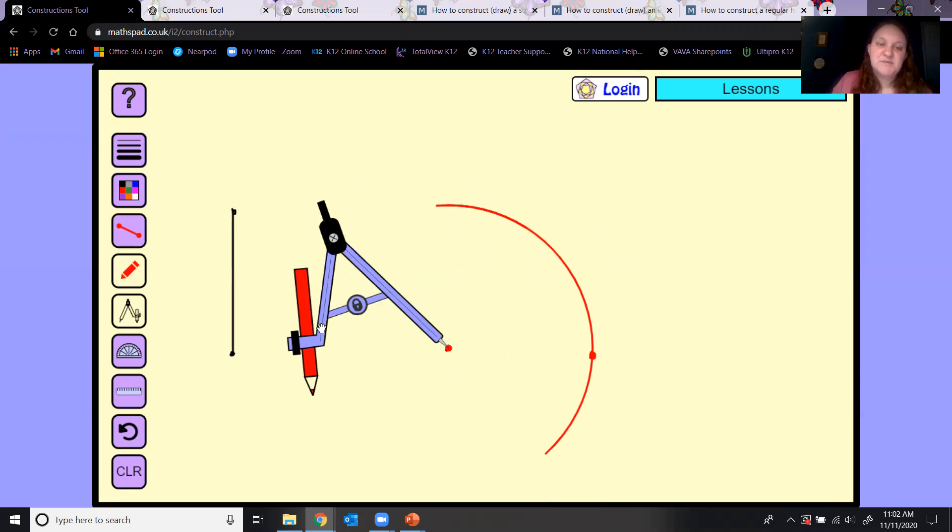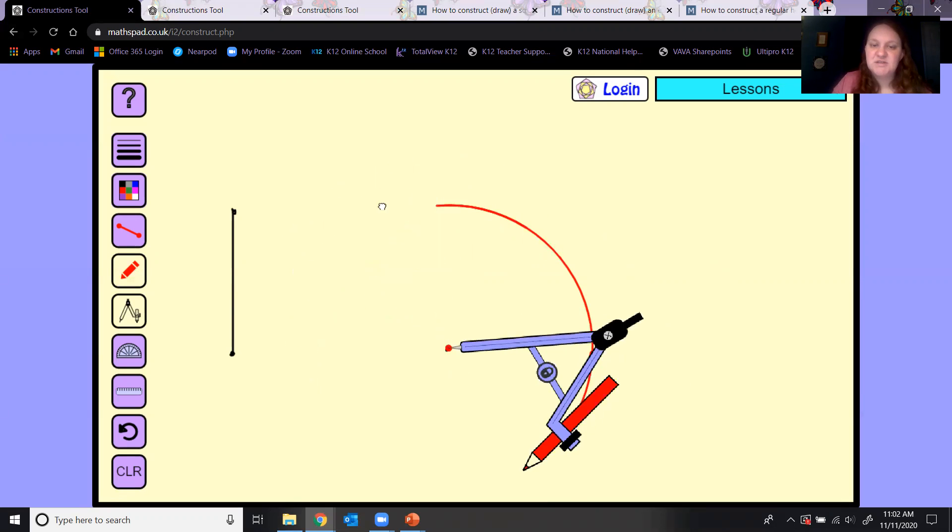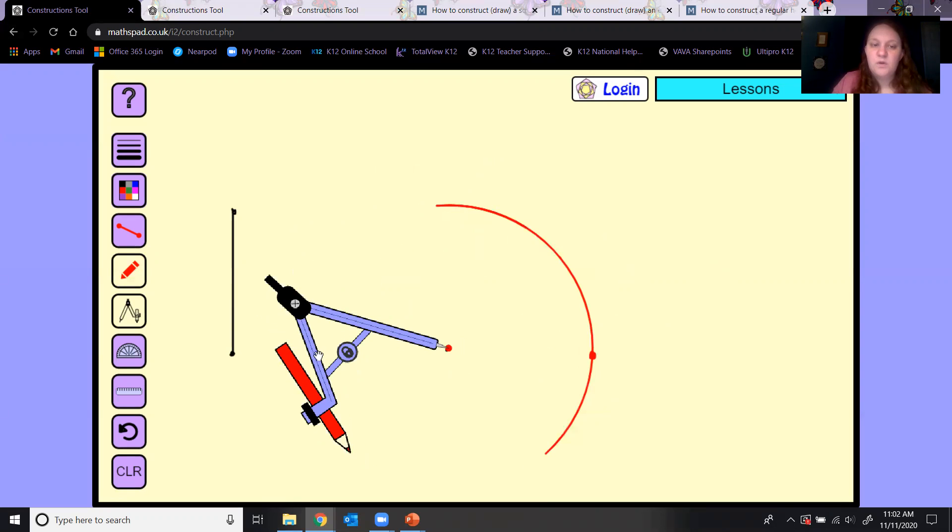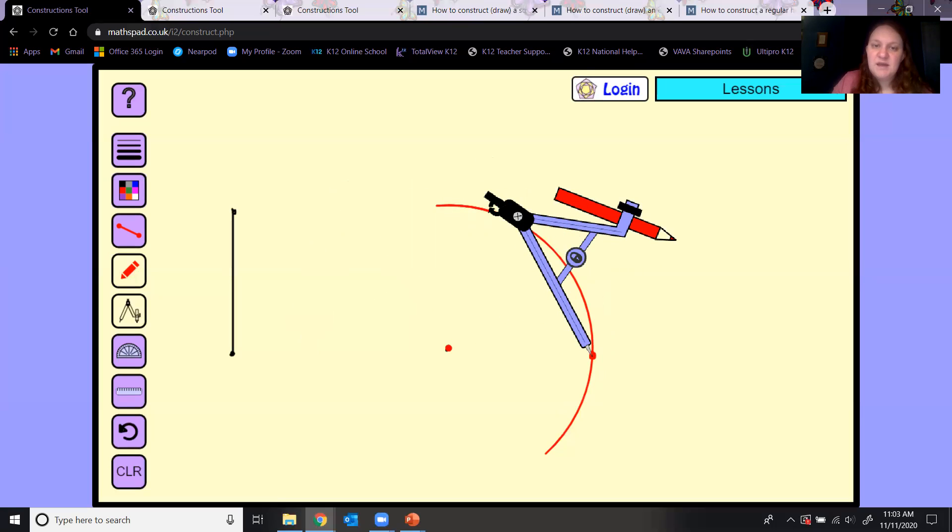Now take your compass, which should still be open the length of those two points because I haven't changed anything. Go over to that point you gave yourself and make another arc that intersects the first one. That intersection, put a point there.